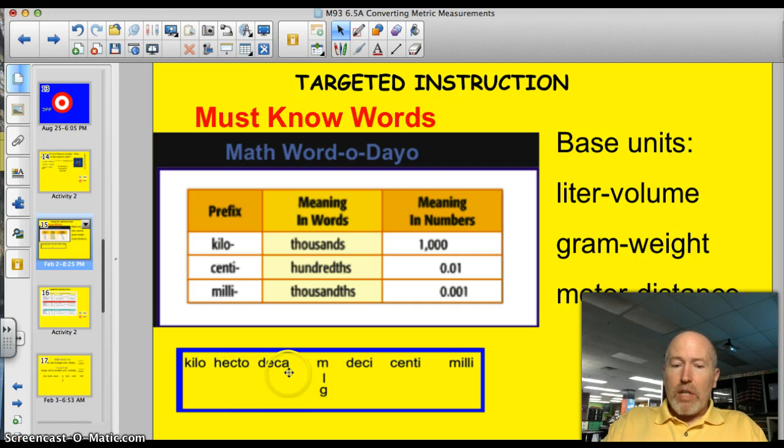But kilo, hecto, deca. In the middle, we have our base units, meters, liters, and grams. Deci, centi, and milli. Those roots and prefixes will help you figure out what the heck is going on.